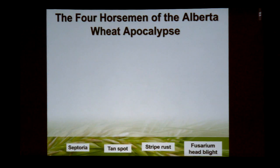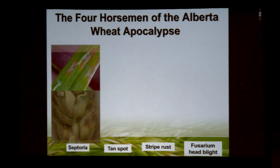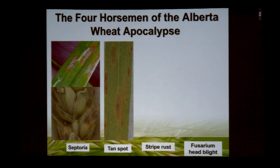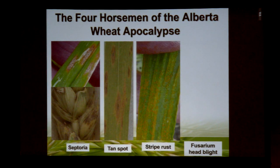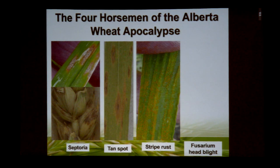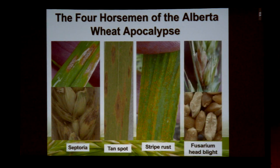If we look at wheat, we have some significant leaf disease problems: the septoria complex that can affect leaf tissue and head tissue, and tan spot which causes leaf disease but is also the same fungus that causes red smudge. Stripe rust is a significant problem depending on the year and what's developing in the Pacific Northwest, because that's where a lot of the inoculum for stripe rust comes from, but also whether we have mild winters with good snow cover that facilitates overwintering. And last but not least, again fusarium head blight.